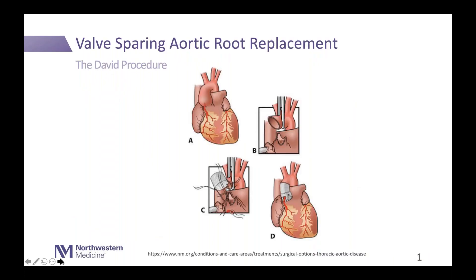The valve-sparing aortic root replacement, the DAVID procedure, is where the valve is deconstructed from the aortic root. We keep the bicuspid aortic valve and can repair it if it's leaky. The aneurysm is completely resected, and the bicuspid aortic valve is pulled up into the Dacron graft where it's resuspended and able to function normally again. This accomplishes two goals: restoring a normal bicuspid aortic valve while replacing the aortic aneurysm. Look for tertiary care centers or centers of expertise who can offer this specialized procedure.